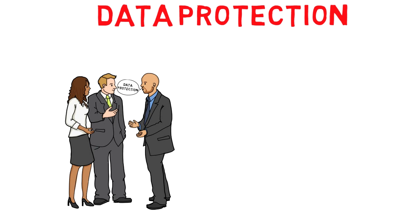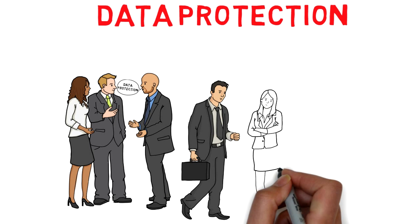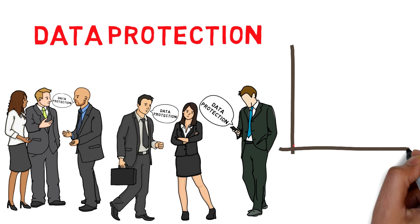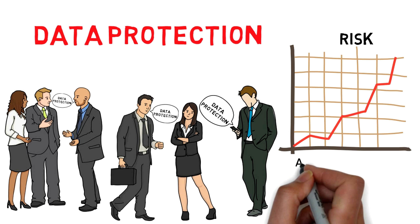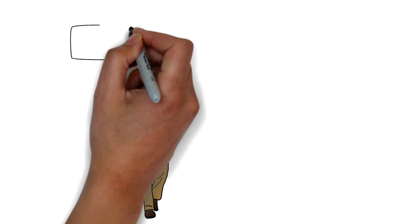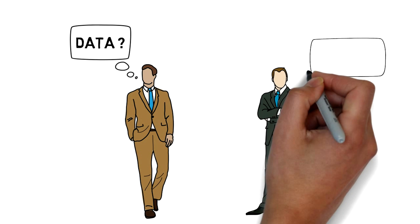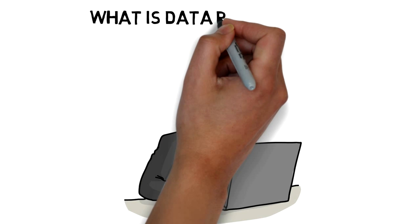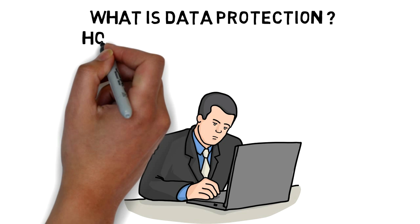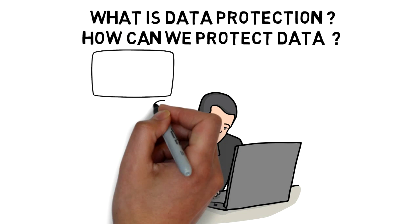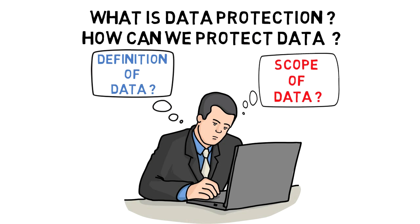The term data protection is increasingly being used in our society because it represents an action which aims to address a growing risk that we collectively attempt to manage, but not everyone agrees about what exactly the words data and protection represent. So what is data protection, and how can we even start to protect data if we are not in agreement about the definition or scope of data?